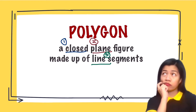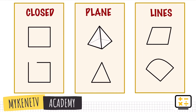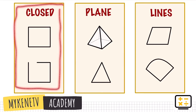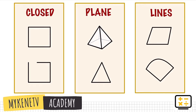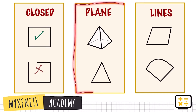Now, what does this mean? Let us look at our next slide. When you say 'closed,' which among these two shapes are closed? This one is a closed figure because it doesn't have any openings, while this one is open — so therefore, this is not a polygon.